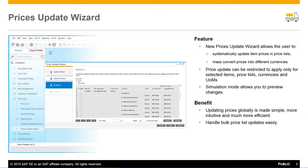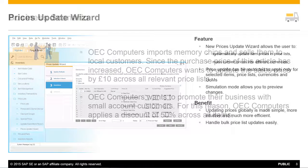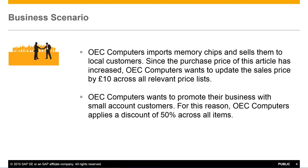Let's have a look at two use case examples where the Prices Update Wizard may be applied. OEC Computers imports memory chips and sells them to their local customers. Since the purchase price of this item has been increased, OEC Computers wants to update the sales price by £10 across all price lists. OEC Computers also wants to promote their business with their small account customers, and would like to apply a discount of 50% across all items specifically for those customers.